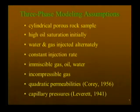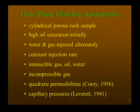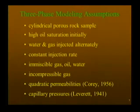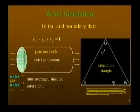In the three-phase case, we again look at a porous cylindrical rock sample. The idea is to have mostly oil but partly water and gas in the rock initially, and then we inject water and gas, alternating the injection. We make assumptions about immiscibility and compressibility of the gas, use simplified quadratic permeabilities as in the two-phase case, and we'll also talk about capillary pressures, which are important.